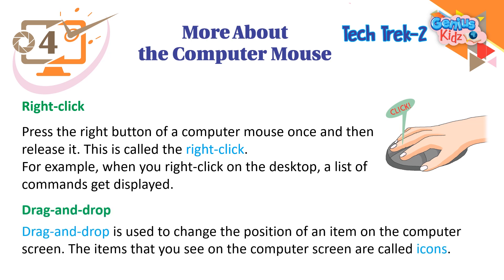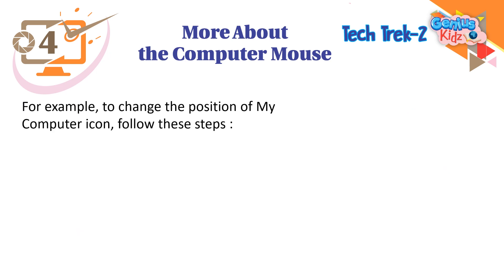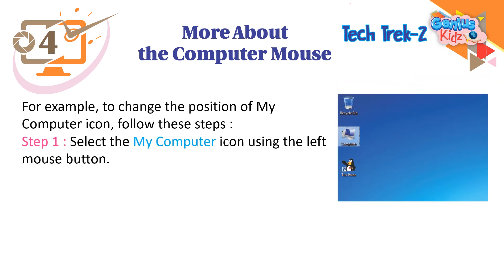Drag and Drop. Drag and drop is used to change the position of an item on the computer screen. The items that you see on the computer screen are called icons. For example, to change the position of the My Computer icon, follow these steps. Step 1: select the My Computer icon using the left mouse button.